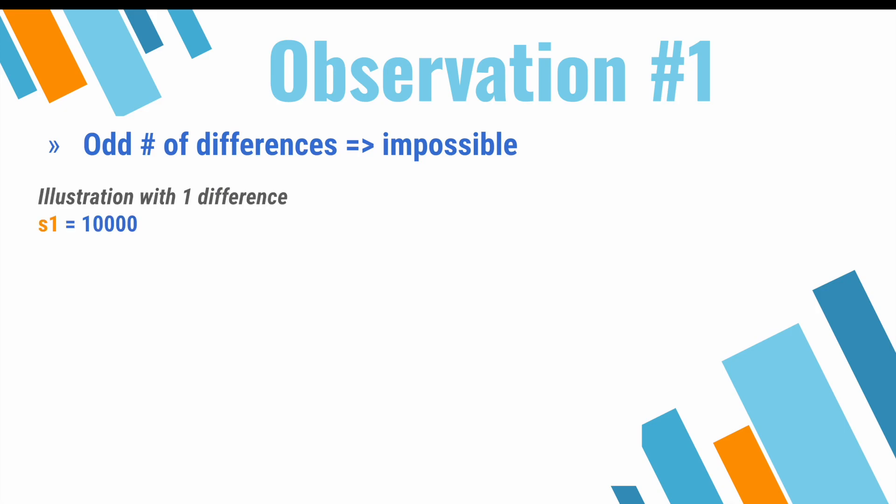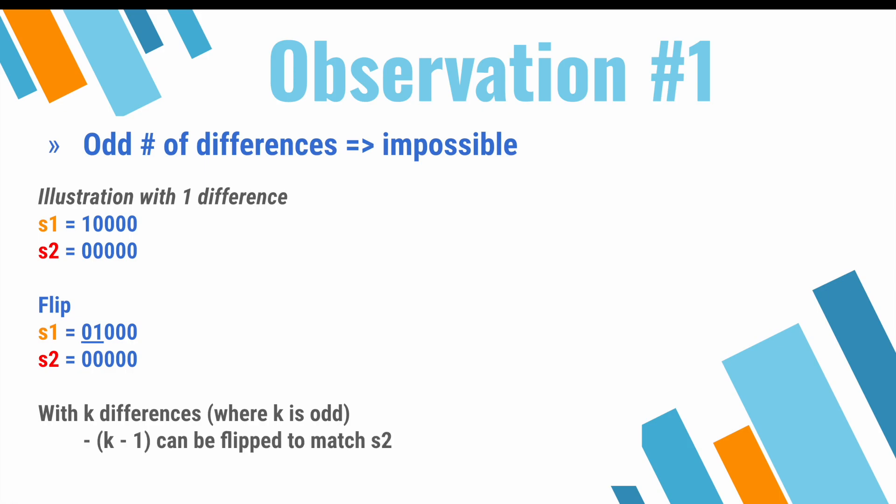Say we have the following strings. If we flip the zeroth index, then we'll be forced to flip a second index. As a result, we'll now have a new mismatched bit, and now we're back to where we started. In general, if you have k differences, where k is an odd number, you'll be able to flip k minus 1 bits two at a time so that they match s2, but you're always going to be left with one bit that differs, and that one bit can never be flipped in isolation.